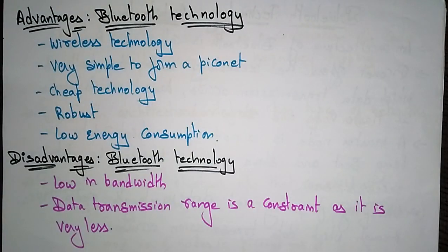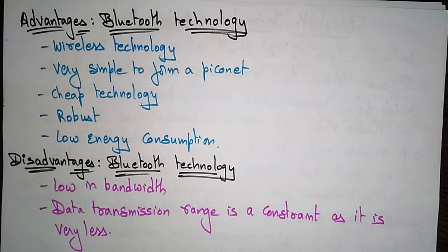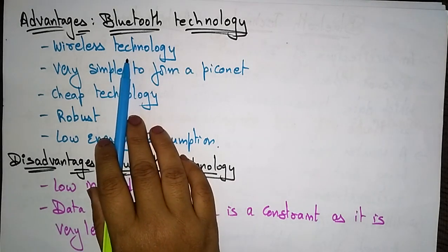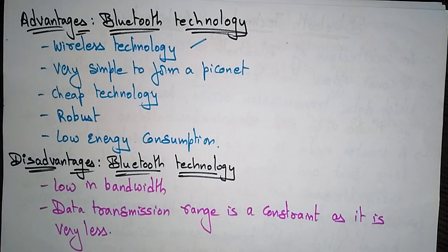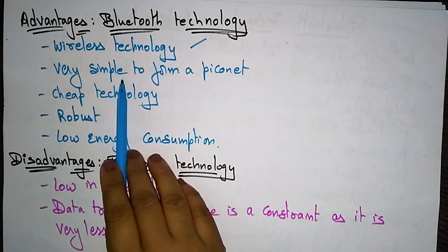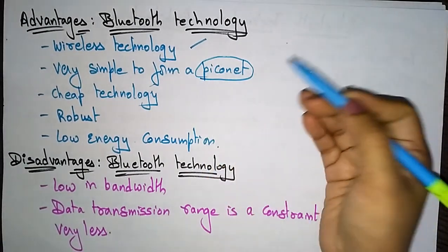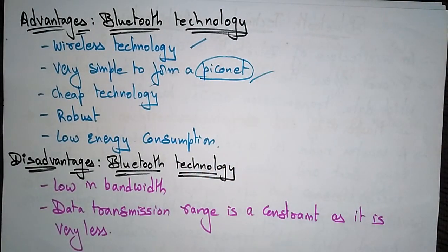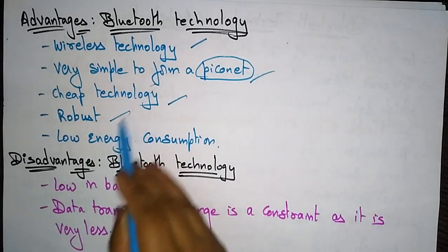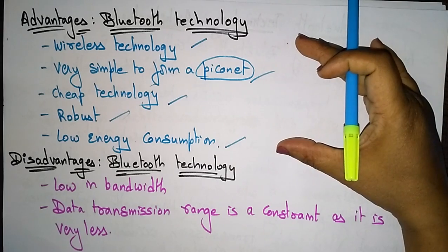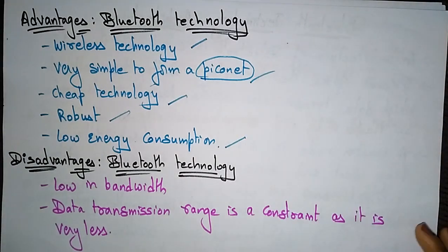The advantages of Bluetooth technology: it is wireless, so no wired infrastructure is needed. It is very simple to form a piconet — a combination of nodes with master and slave communications. Other advantages include being cheap, robust, and having low energy consumption.